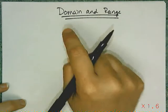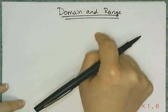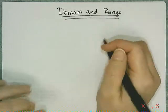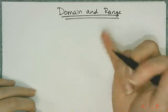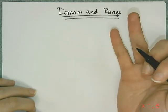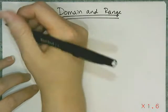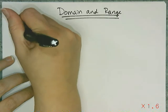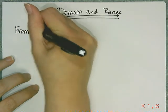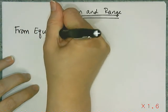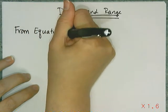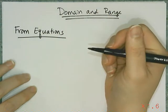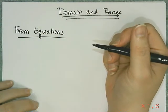Let's work on finding the domain and range from a function in two representations: from equations and from graphs. We're going to look at the three families — the linear, the quadratic, and the exponential.